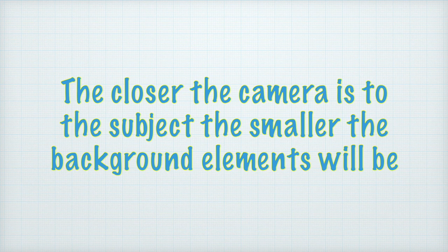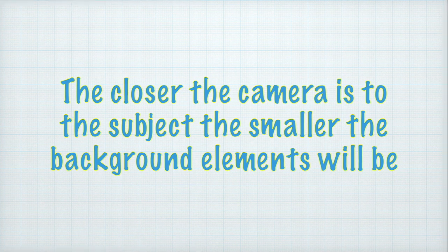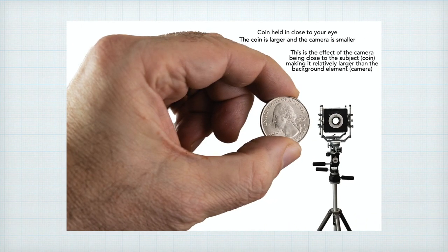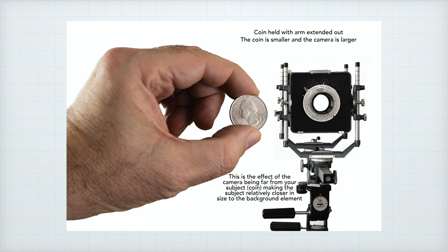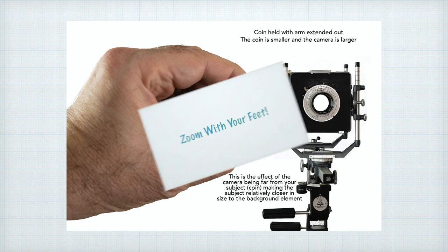The closer the camera is to the subject, the smaller the background elements will appear and the scene will look expanded in depth. Here's an easy exercise: take an object of known size — a large coin — and hold it between your thumb and forefinger. Close one eye and hold the coin about three inches in front of your open eye. Look at the coin and a distant object. The coin appears large compared to that distant object. Now extend your arm to hold the coin as far away as you can — the coin gets smaller while the distant object remains the same size.